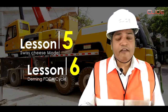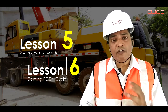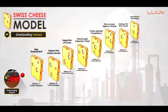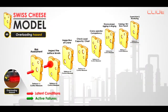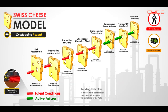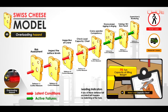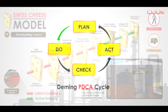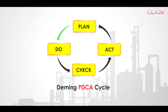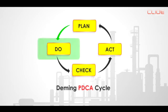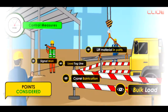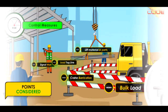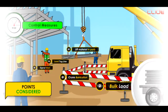In the next lessons 5 and 6, I will cover the famous Accident Possession Model and the Swiss cheese model for analyzing the latent and active conditions for Overloading Hazard, and how to apply the PDCA model for continuous improvement to carry out a safe lift.